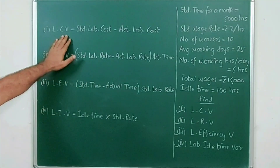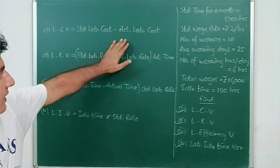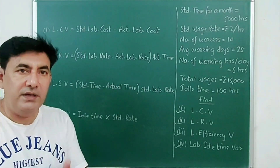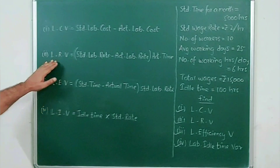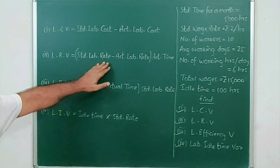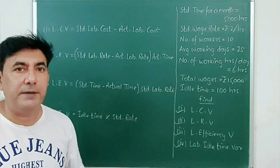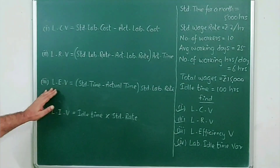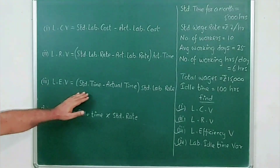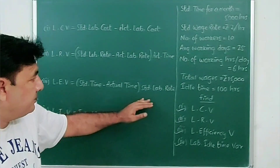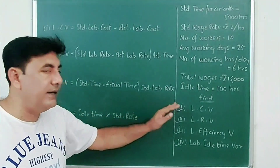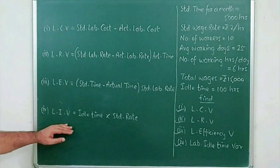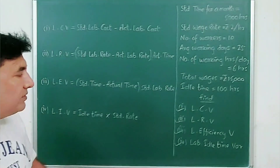The formulas are: labor cost variance equals standard labor cost minus actual labor cost — same structure as material. Labor rate variance equals standard labor rate minus actual labor rate multiplied by actual time. Labor efficiency variance equals standard time minus actual time multiplied by standard labor rate. Labor idle time variance equals idle time multiplied by standard rate. You must learn these formulas.